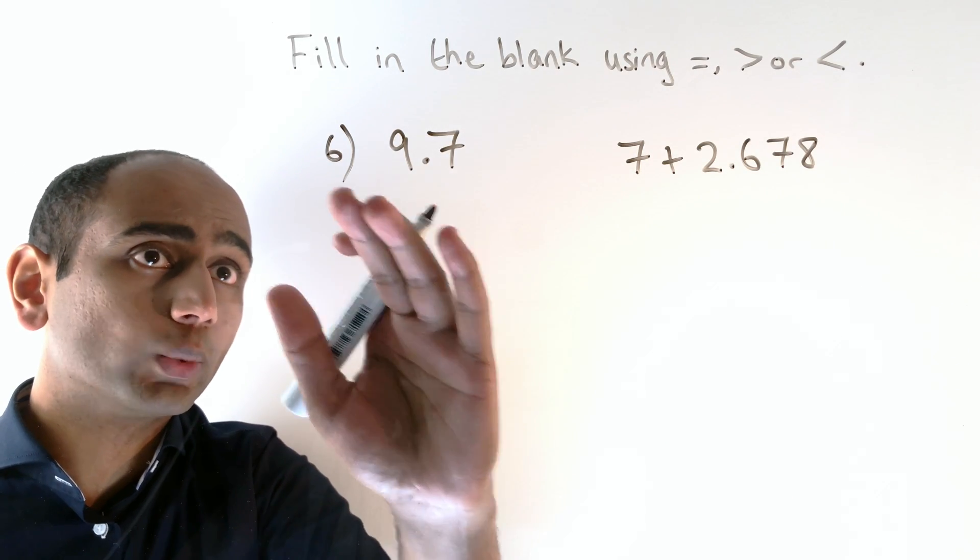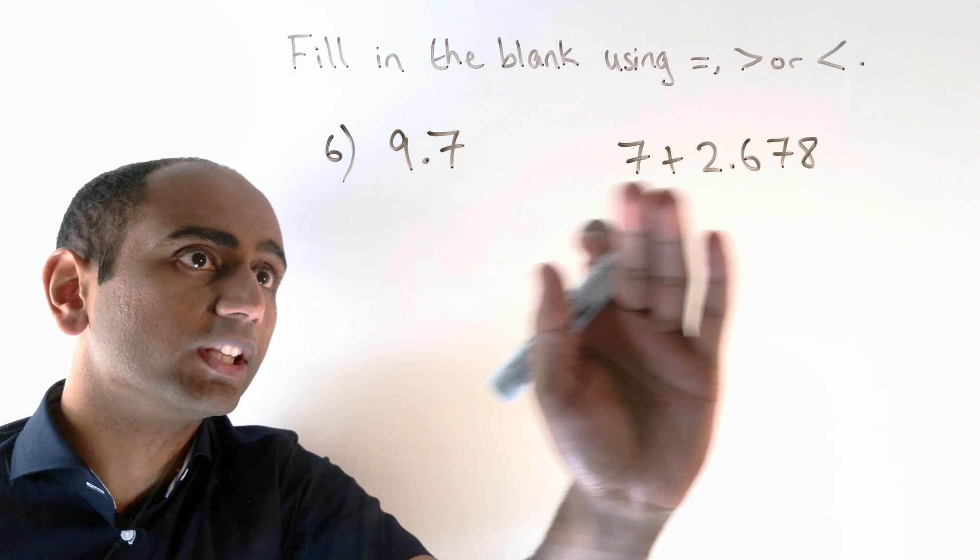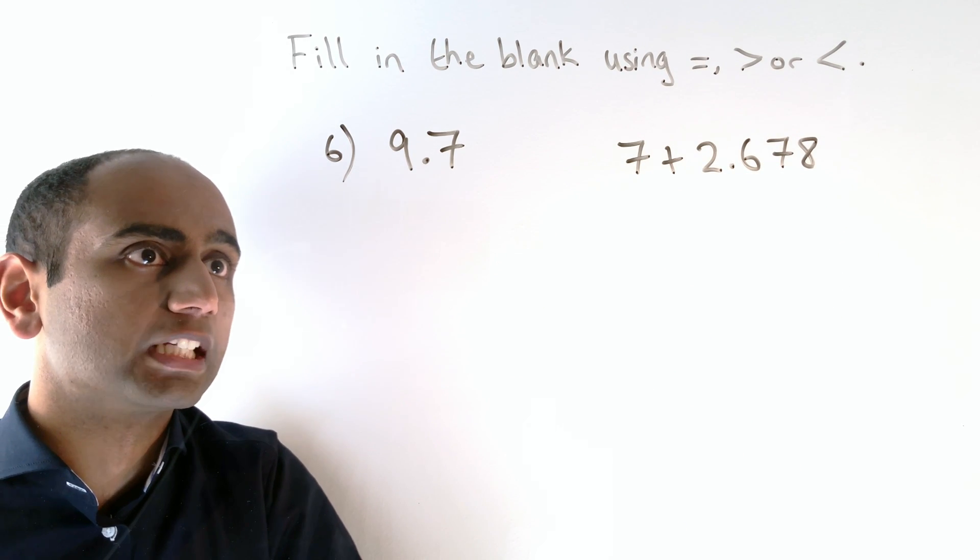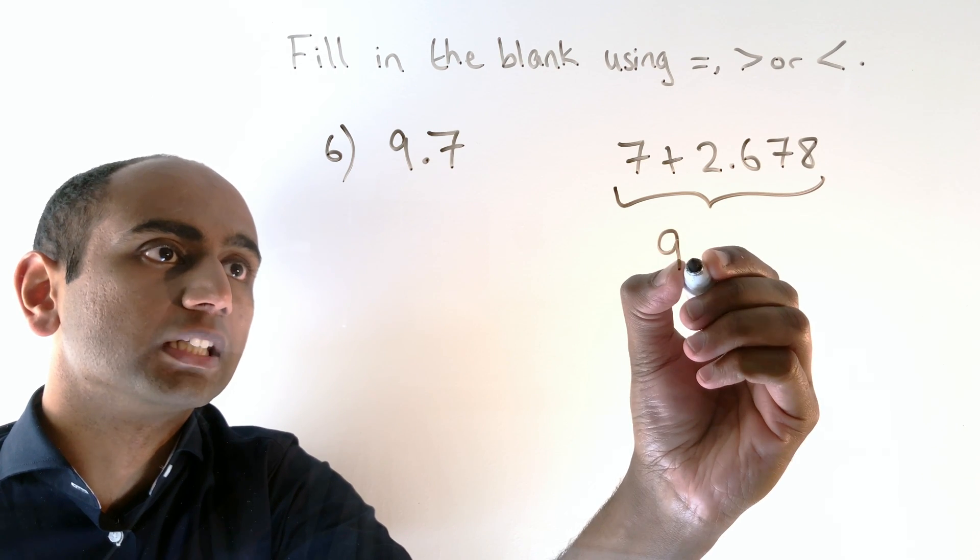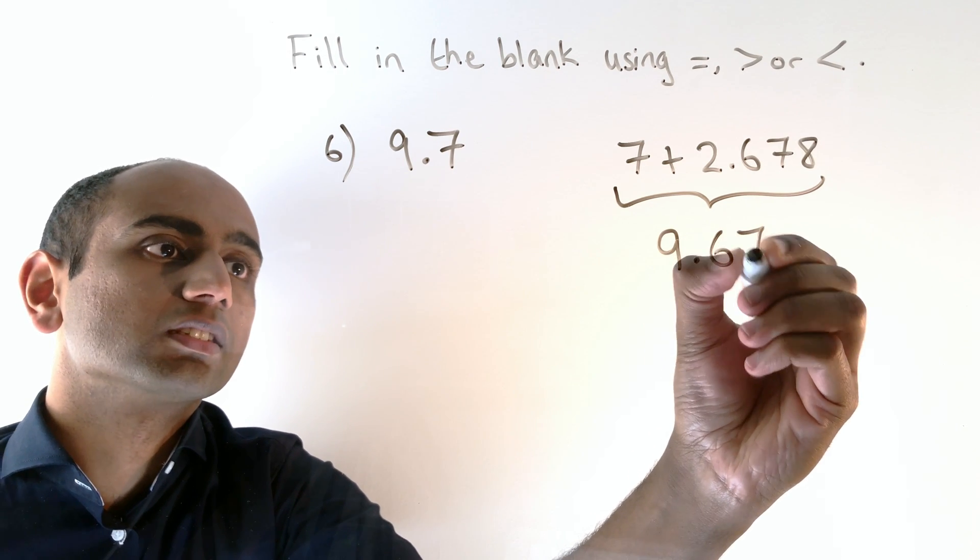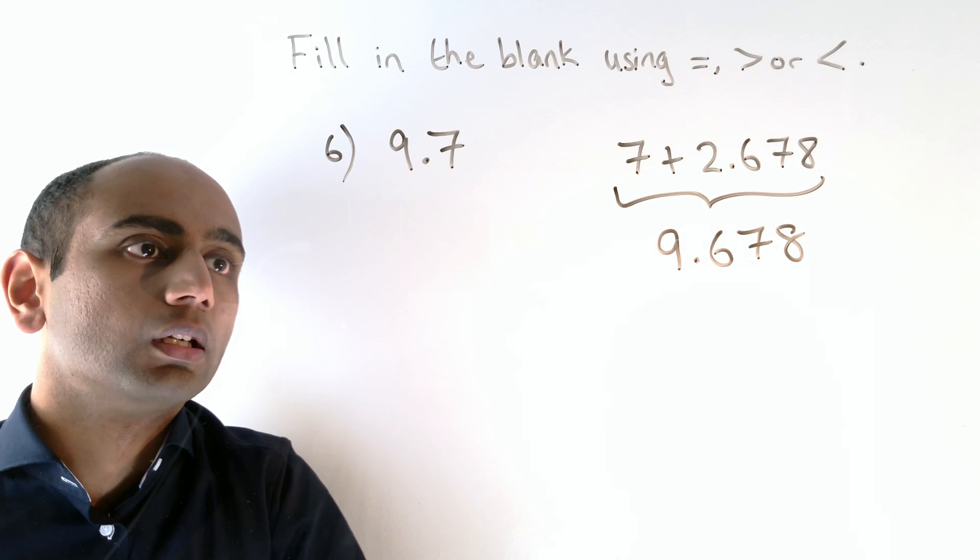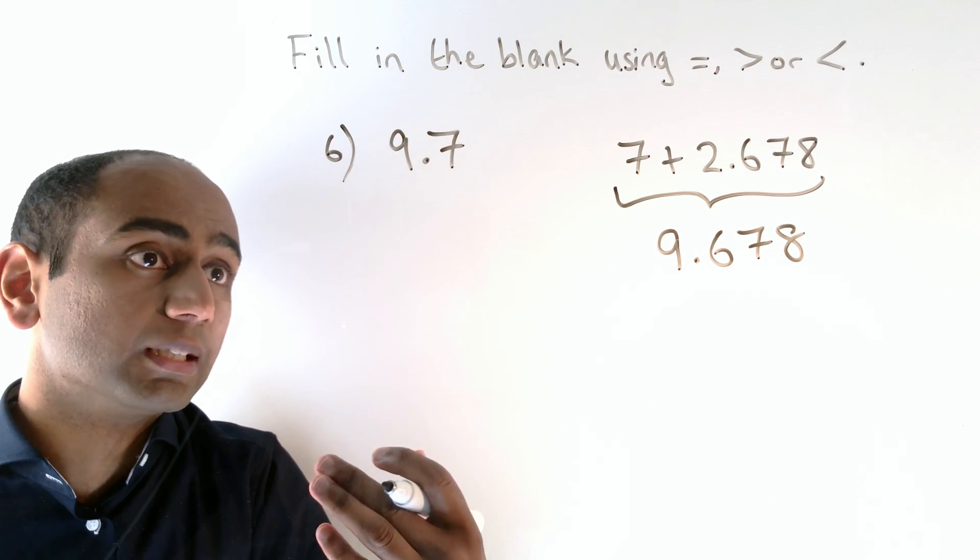In question six, we're comparing 9.7 with 7 plus 2.678. 7 plus 2.678 works out to be 9.678, and we can see that 9.7 is the bigger number.